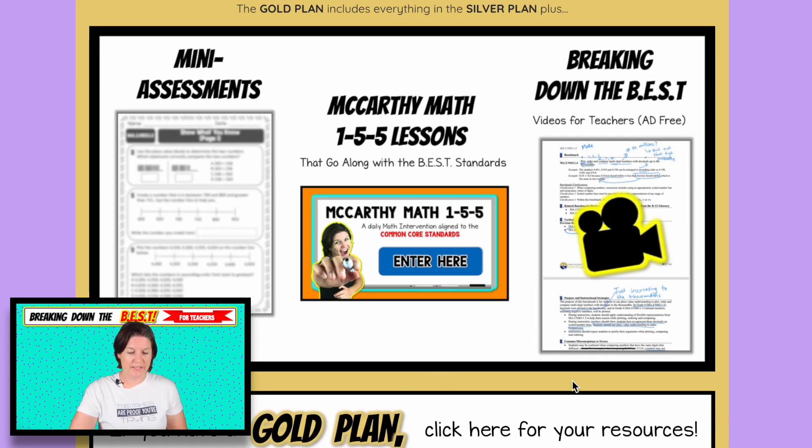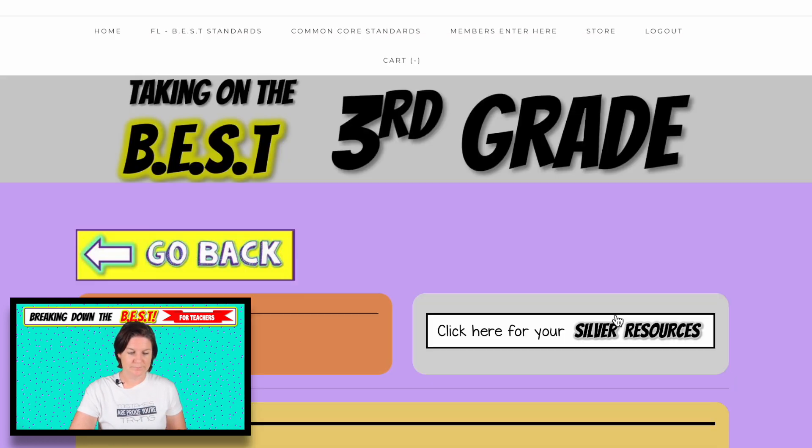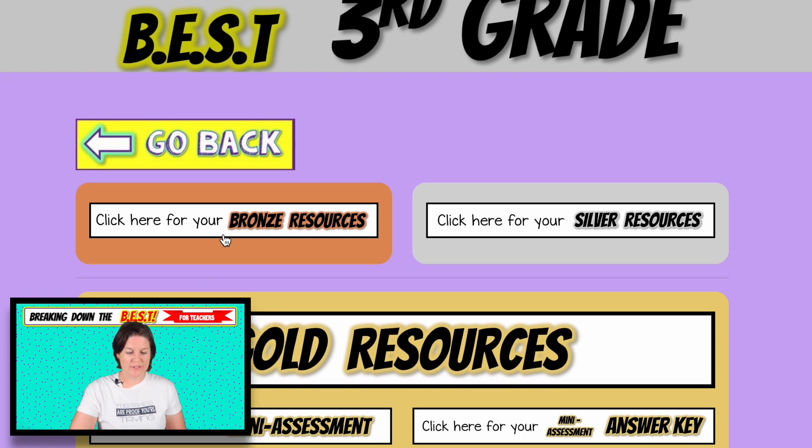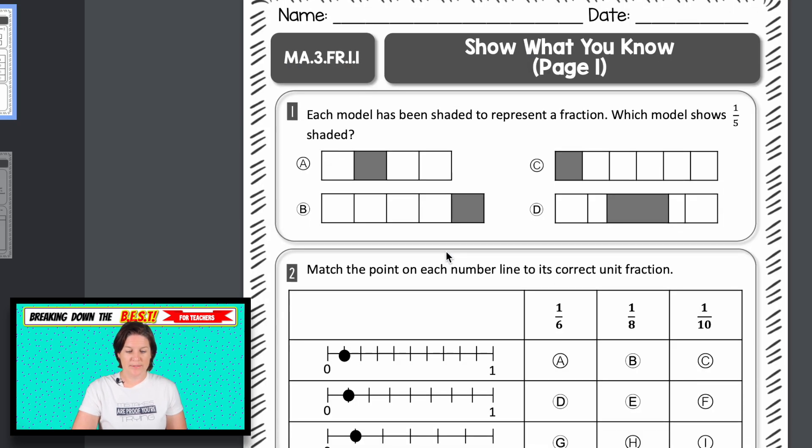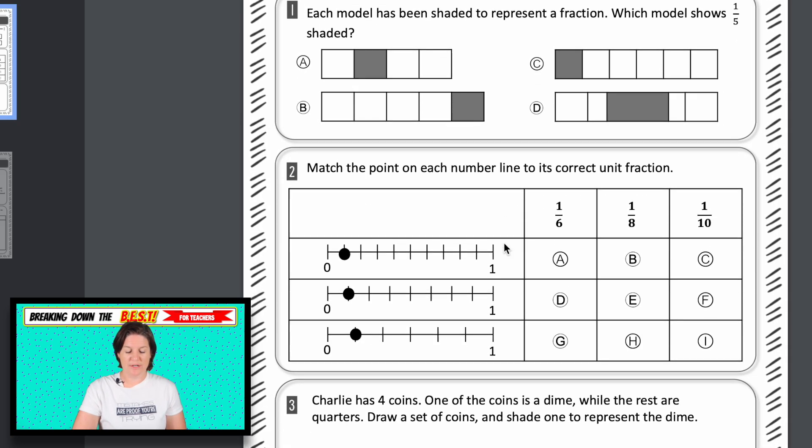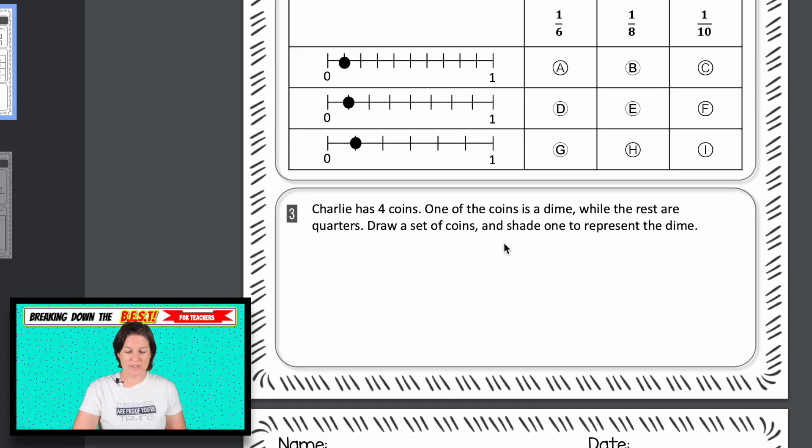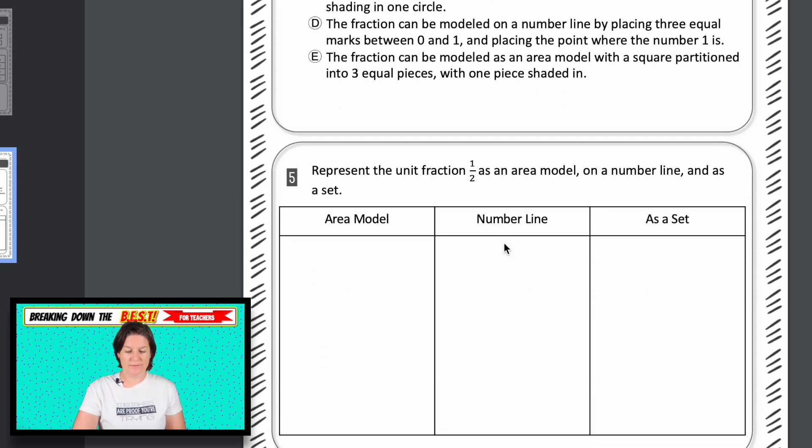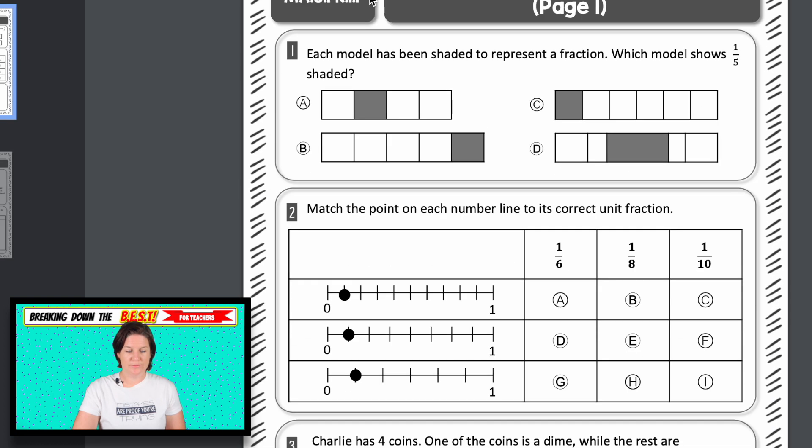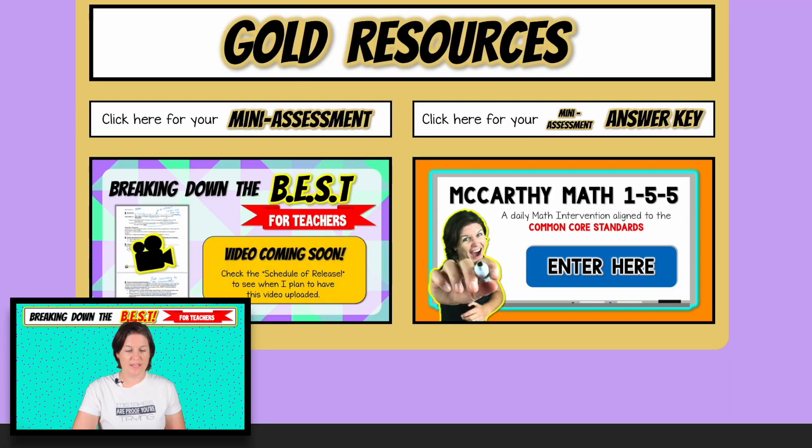Then we have the gold plan. You can go back to those bronze video lessons or the silver extra practice at any time. And with the gold plan, you also have a mini assessment specifically aligned to this standard. So you can see we've got a variety of question types here. Take a look at those all about that unit fraction. Got your answer key right there.